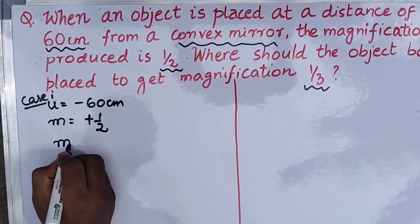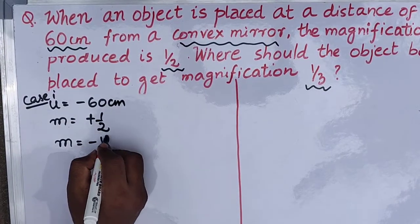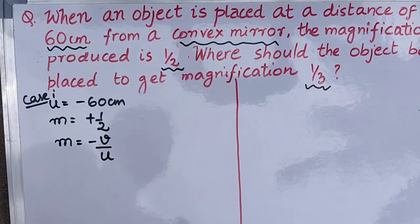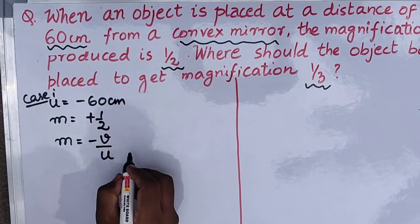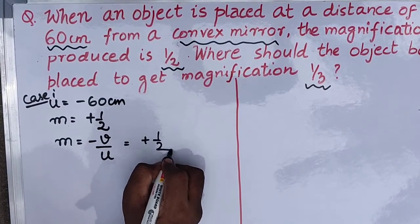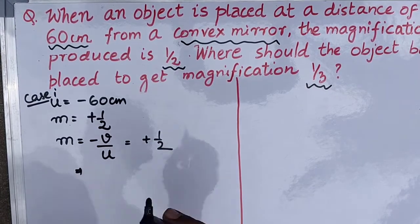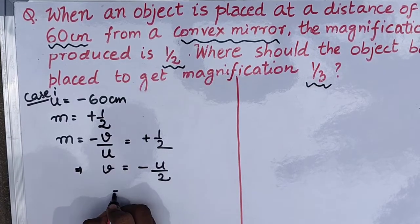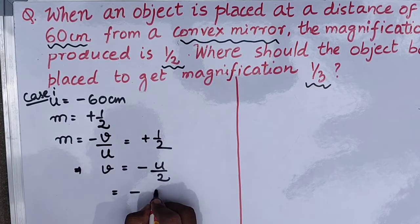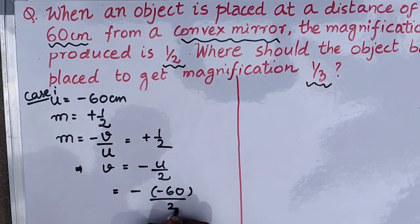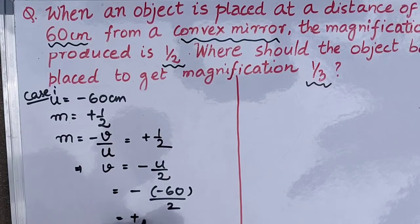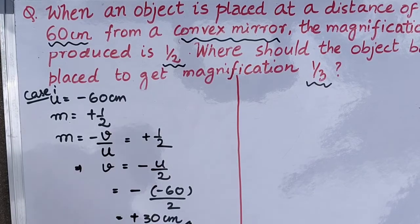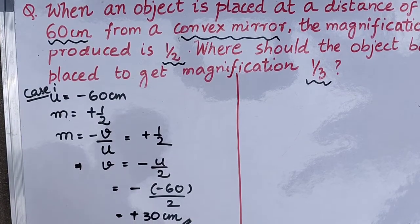Using the magnification formula, we can find the value of v, the distance of the image from the mirror. So m is equal to minus v by u, and its value is plus half. Rearranging, v is equal to minus u by 2. The value of u is minus 60 centimeters, so v equals plus 30 centimeters. This means the image is formed 30 centimeters behind the mirror.